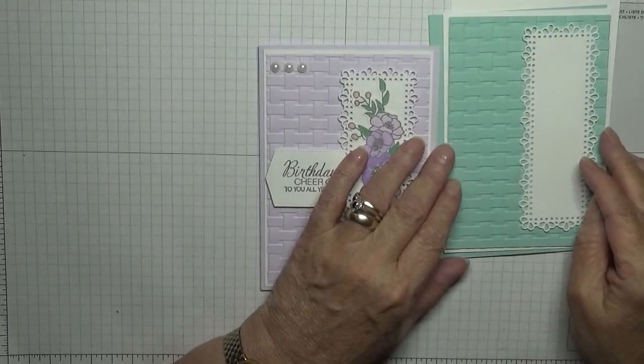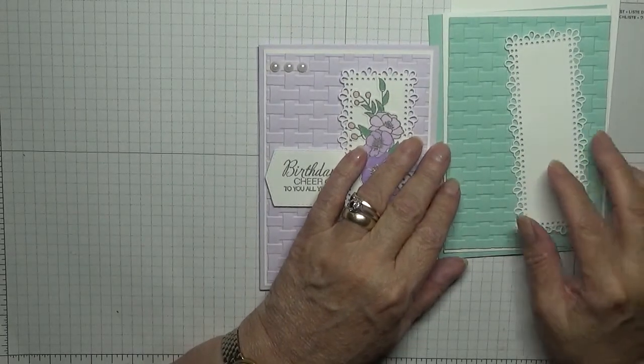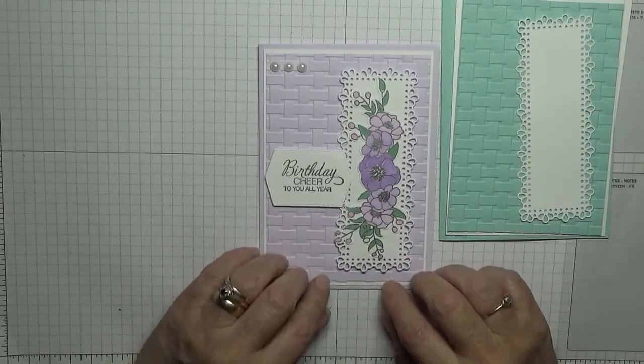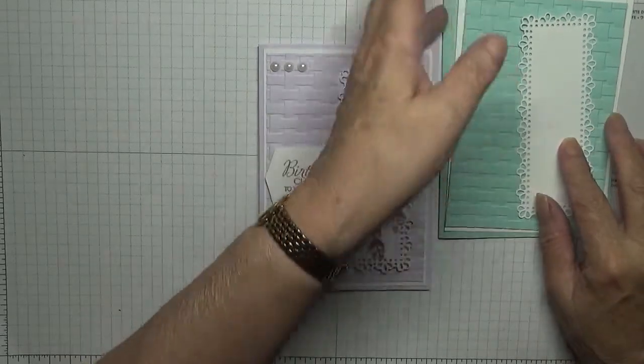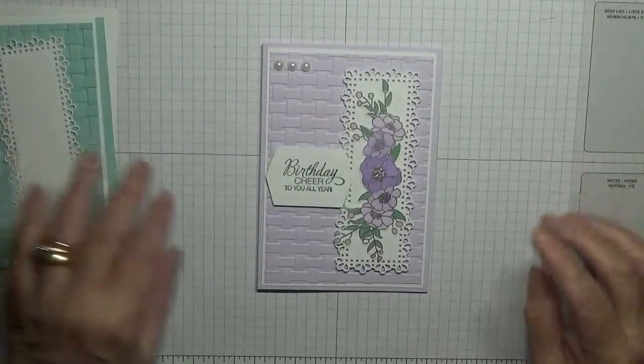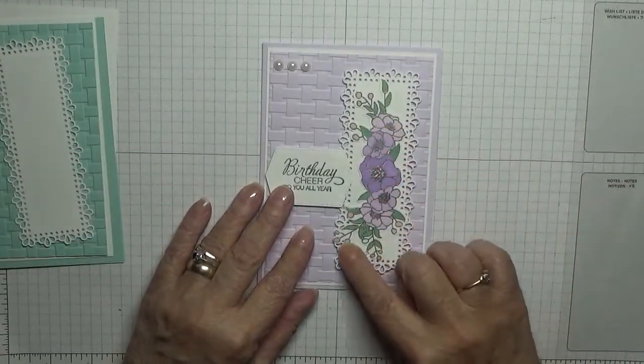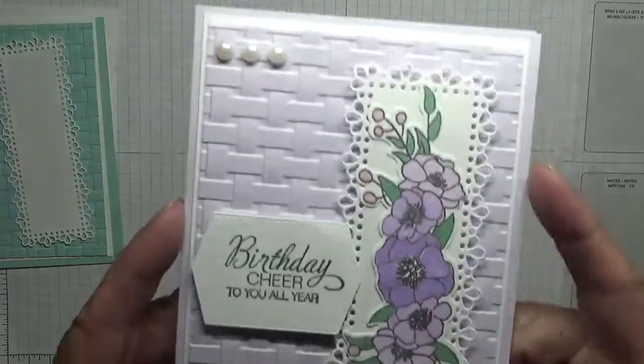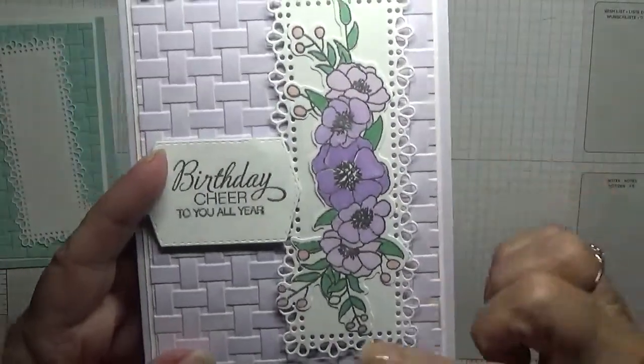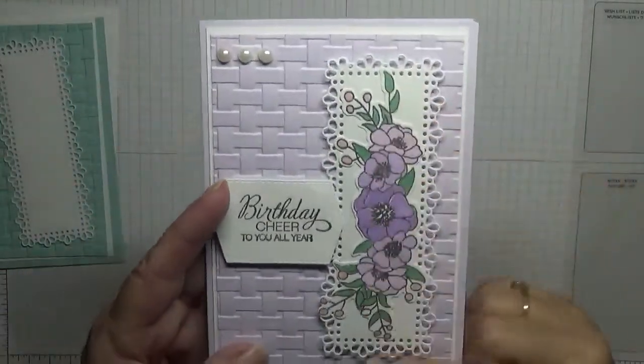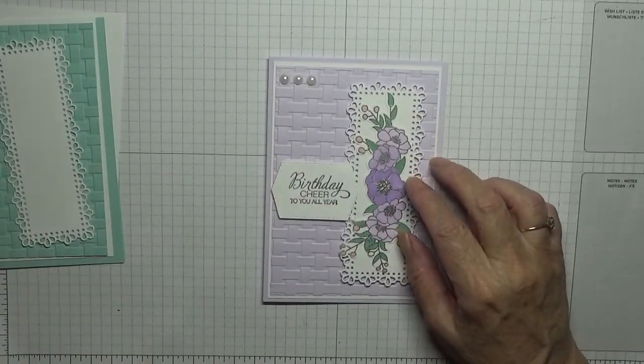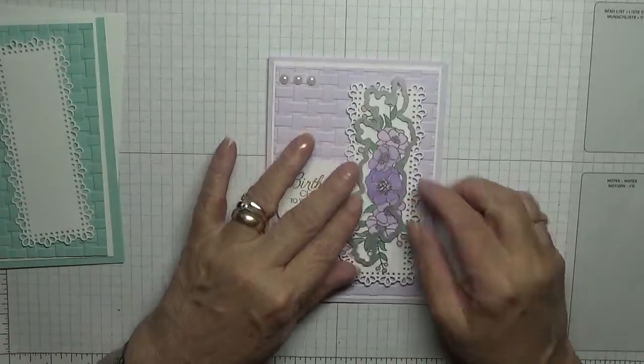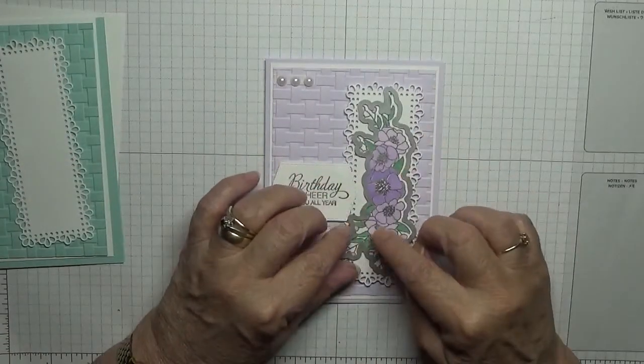Then we're just going to heat emboss this in silver. As you can see, I heat embossed this in silver and then colored it in and cut it out using the Bloom and Grow die.